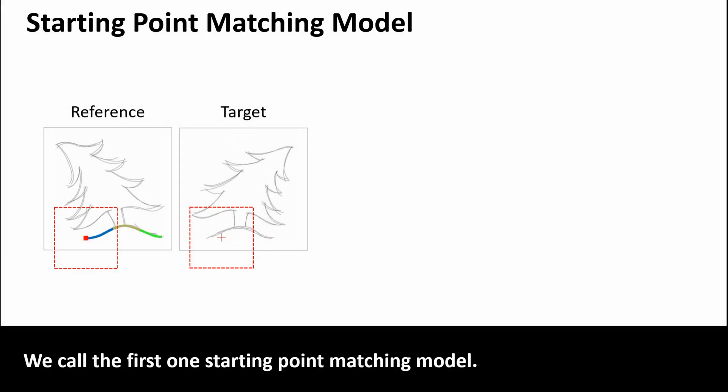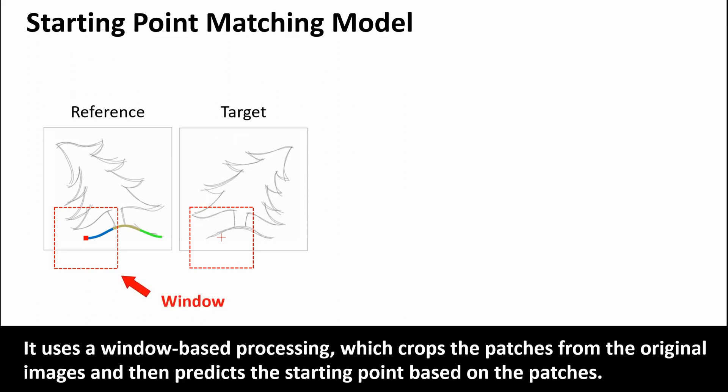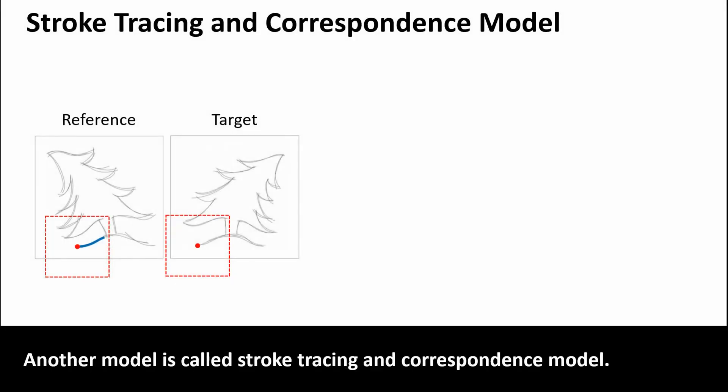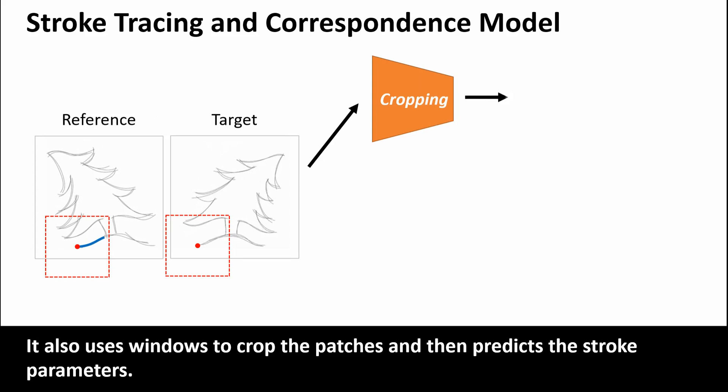We call the first one starting point matching model. It uses a window-based processing which crops the patches from the original images and then predicts the starting point based on the patches. Another model is called Stroke Tracing and Correspondence model. It also uses windows to crop the patches and then predicts the stroke parameters.